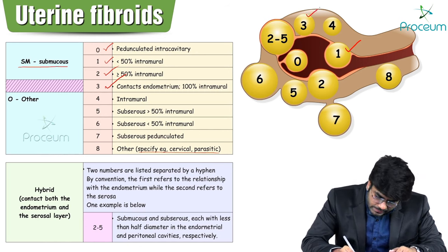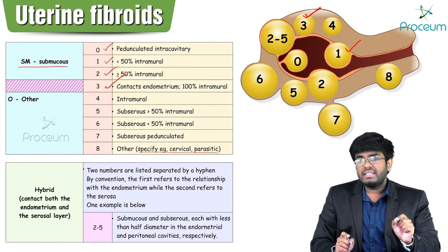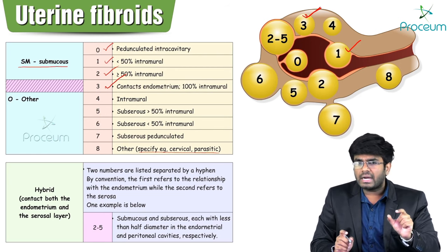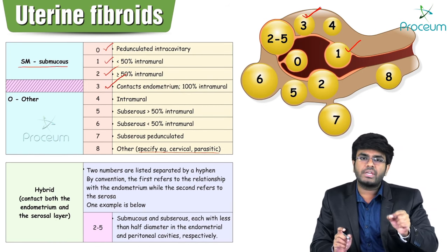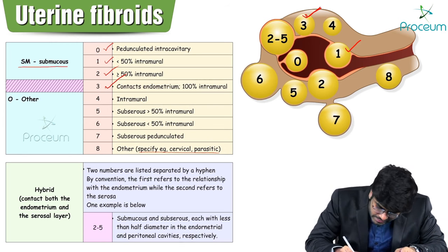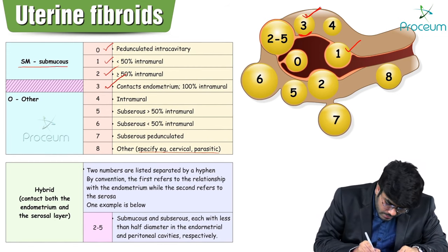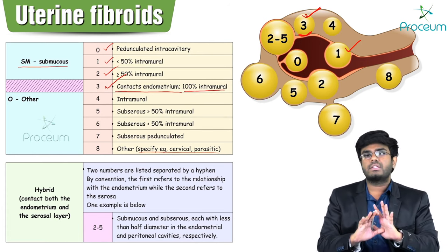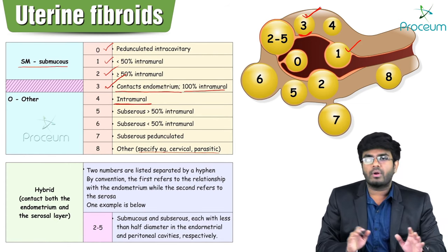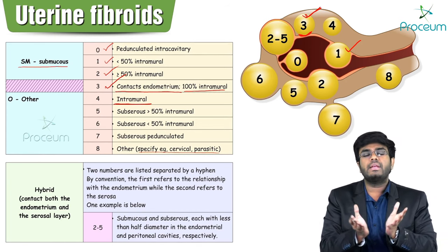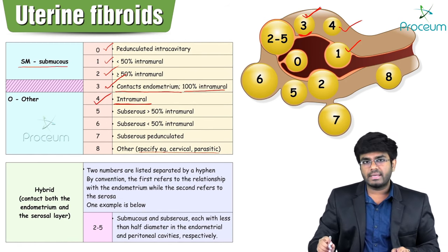Important exam point: if a fibroid is in the uterine wall and just coming into contact with — just touching — the uterine endometrium, it is grade 3. It contacts the endometrium but is 100% intramural in nature. If the fibroid is completely enclosed in the myometrium without even touching the endometrium, it is grade 4 — absolutely intramural.